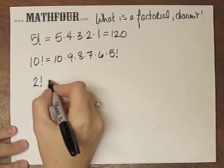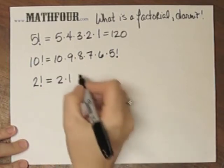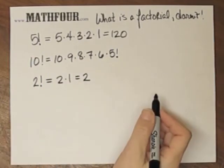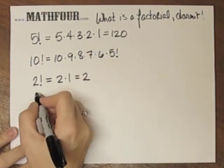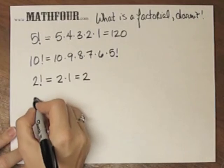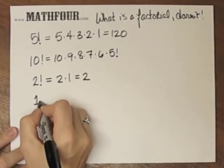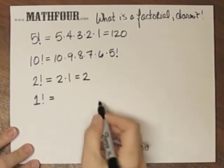2 factorial is just 2. Notice 3 factorial is 3 times 2 times 1, which is 6, and we can do a bunch of other ones. These are the interesting ones. 1 factorial is just 1.